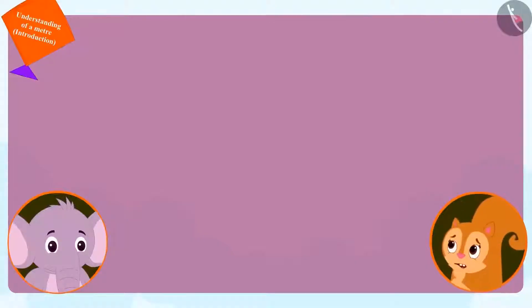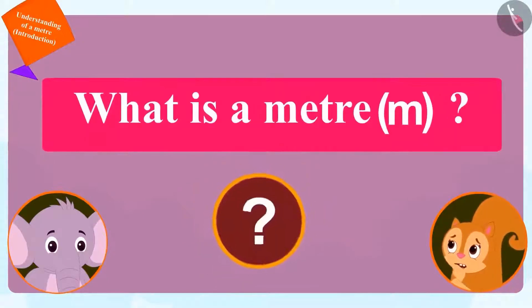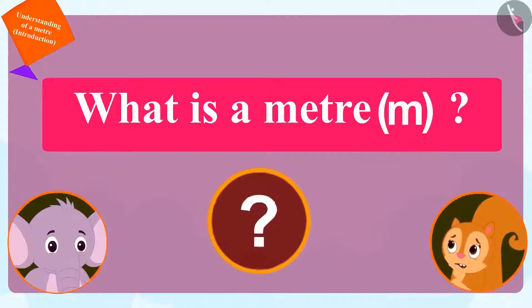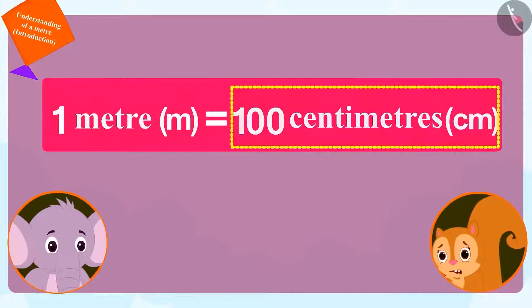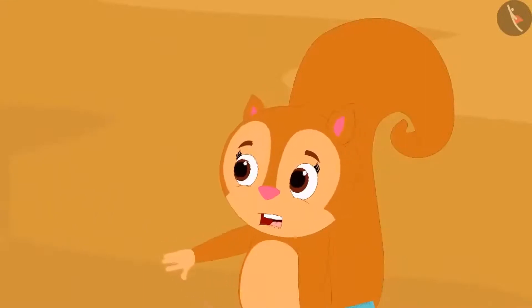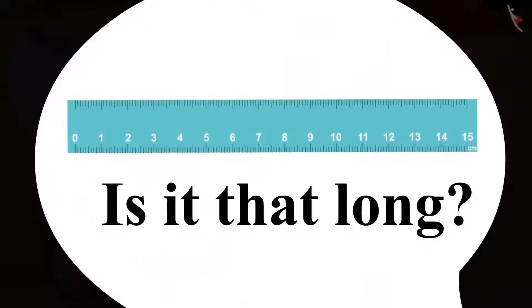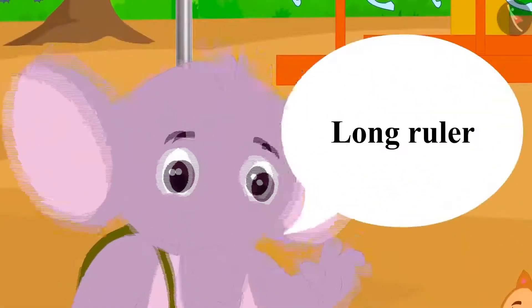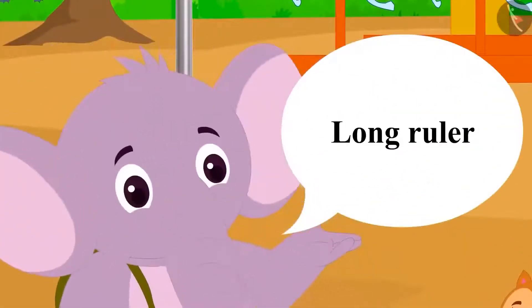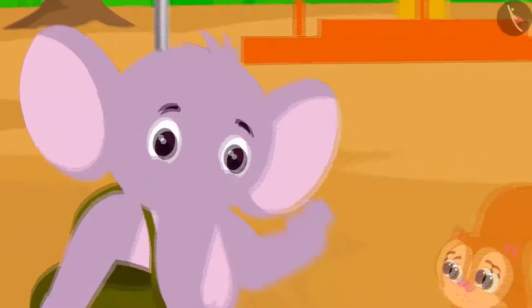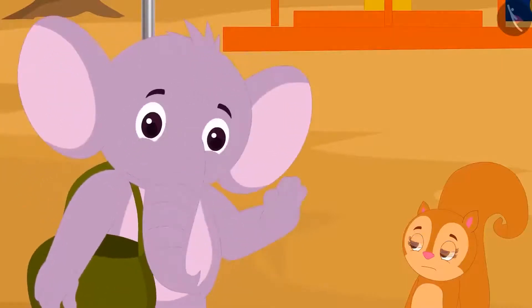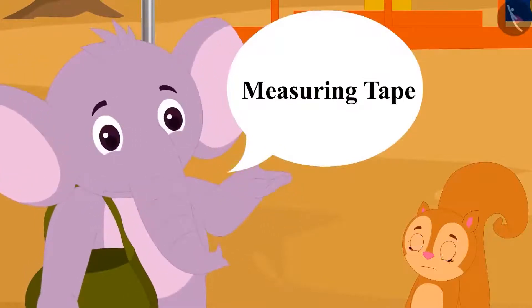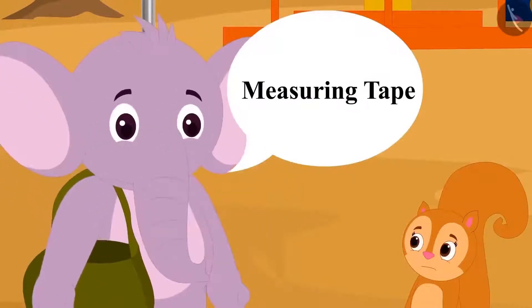Chanda immediately asked Appu, what is this meter? Appu then explained to her that one meter is equal to hundred centimeters. Chanda was shocked. She asked Appu, is it possible to make such a long ruler? Yes, there is a long ruler to measure in meters. But if we have to measure the length of any object in meters, we can do this more easily by using a measuring tape.